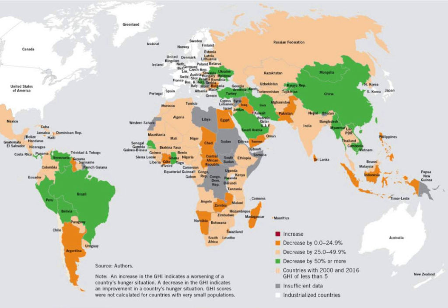The GHI combines four component indicators: 1) the proportion of the undernourished as a percentage of the population; 2) the proportion of children under the age of 5 suffering from wasting; 3) the proportion of children under the age of 5 suffering from stunting; and 4) the mortality rate of children under the age of 5. The data and projections used for the 2017 GHI are for the period from 2011 to 2016.